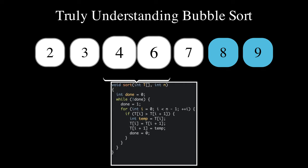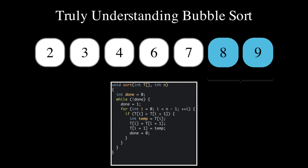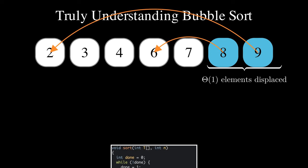If the number of elements displaced from the end of the array is constant, then the number of passes is theta of 1, and therefore the time complexity overall is still theta of n.